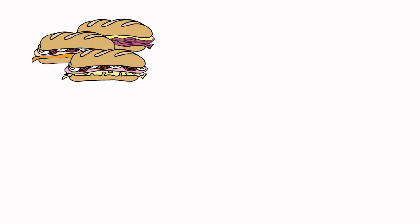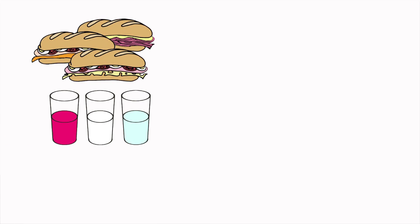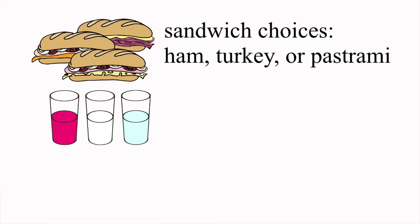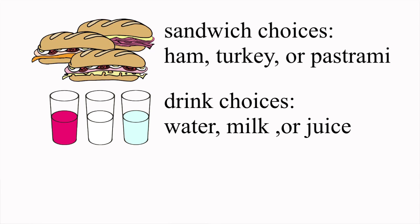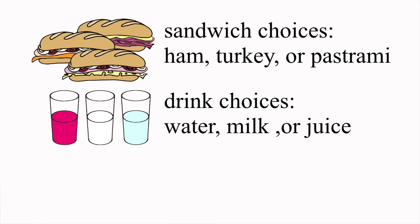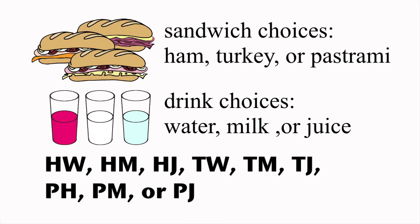A tree diagram shows all possible outcomes of an event with branches or line segments connecting items or choices. It looks like this. Let's say students have a choice of three sandwiches and three drinks in the cafeteria. Each student can have only one sandwich and one drink. The sandwich choices are ham, turkey, or pastrami. The drink choices are water, milk, or juice. A systematic list would be HW, HM, HJ, TW, TM, TJ, PW, PM, or PJ. You can see there are nine combinations of lunches in the cafeteria.